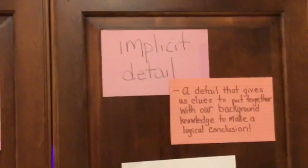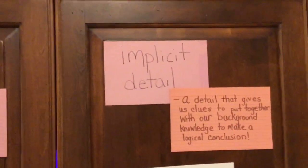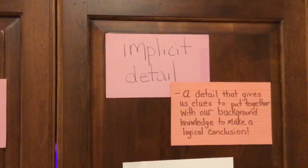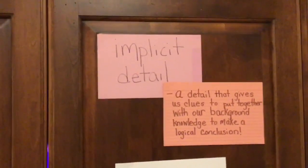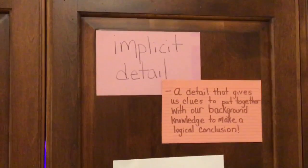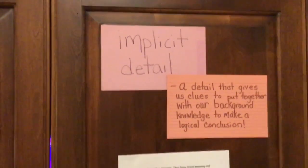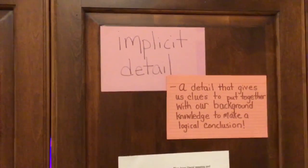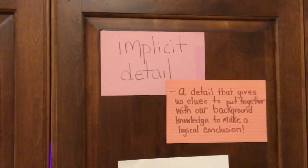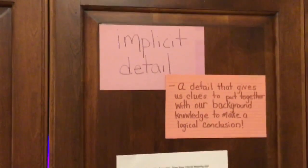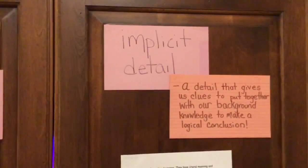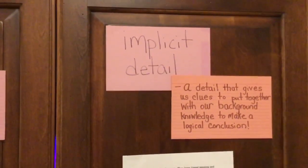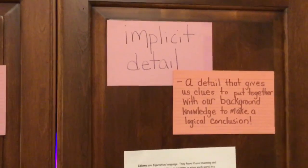An implicit detail is a detail that gives us clues to put together with our background knowledge to make a logical conclusion. Please remember, this will help you when you are making inferences. In the case where you are coming up with a character trait to describe Leah, this would be a helpful hint to remember because authors don't just come out and give that character trait — they give us details that imply the character trait.